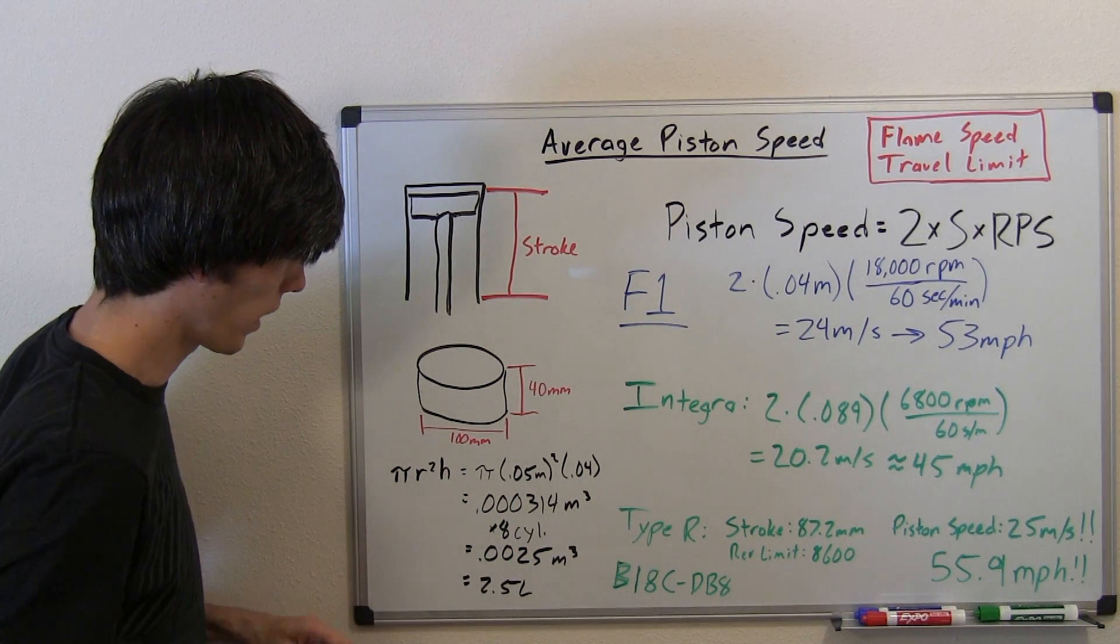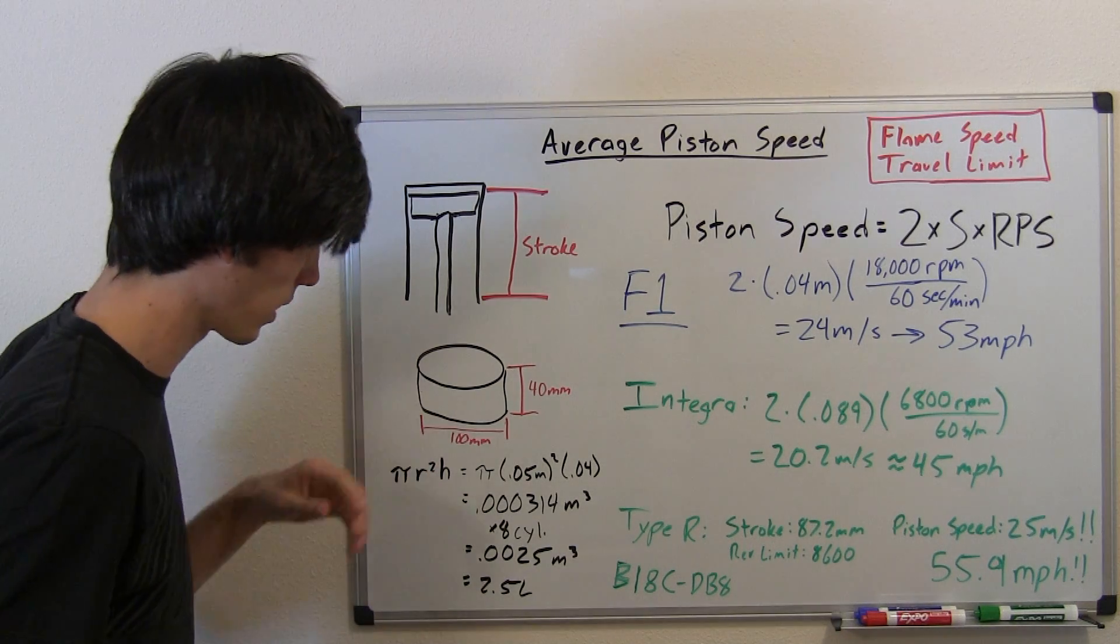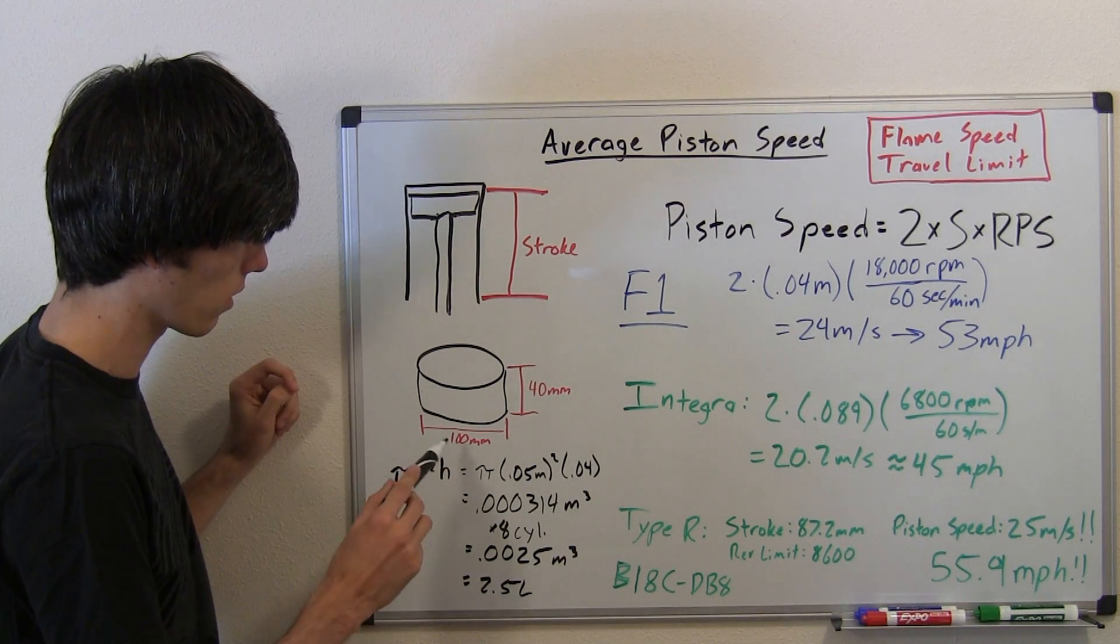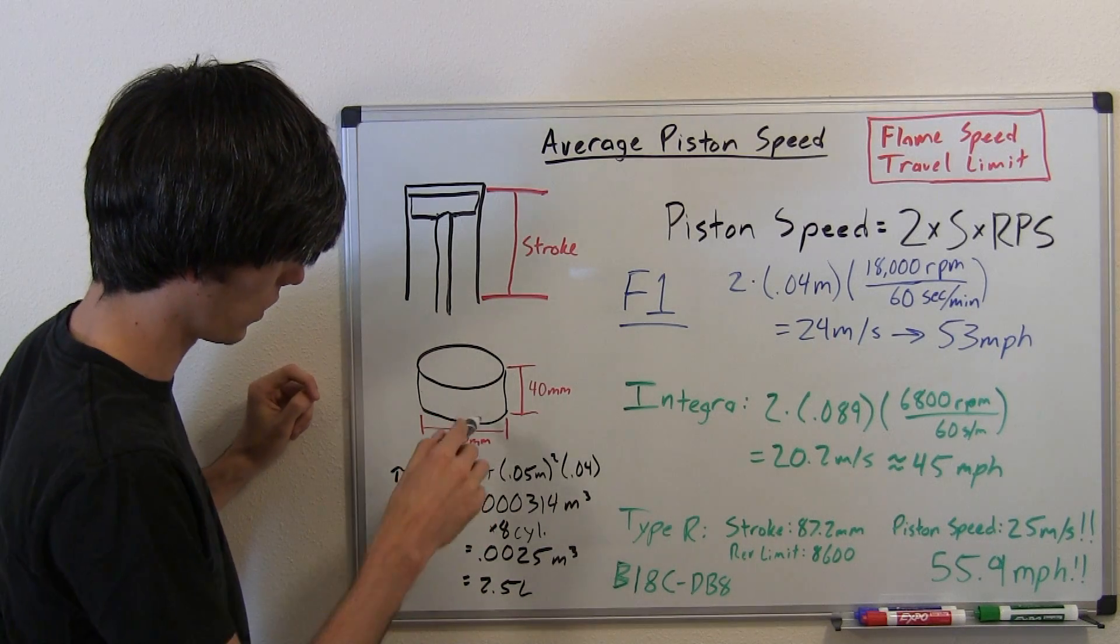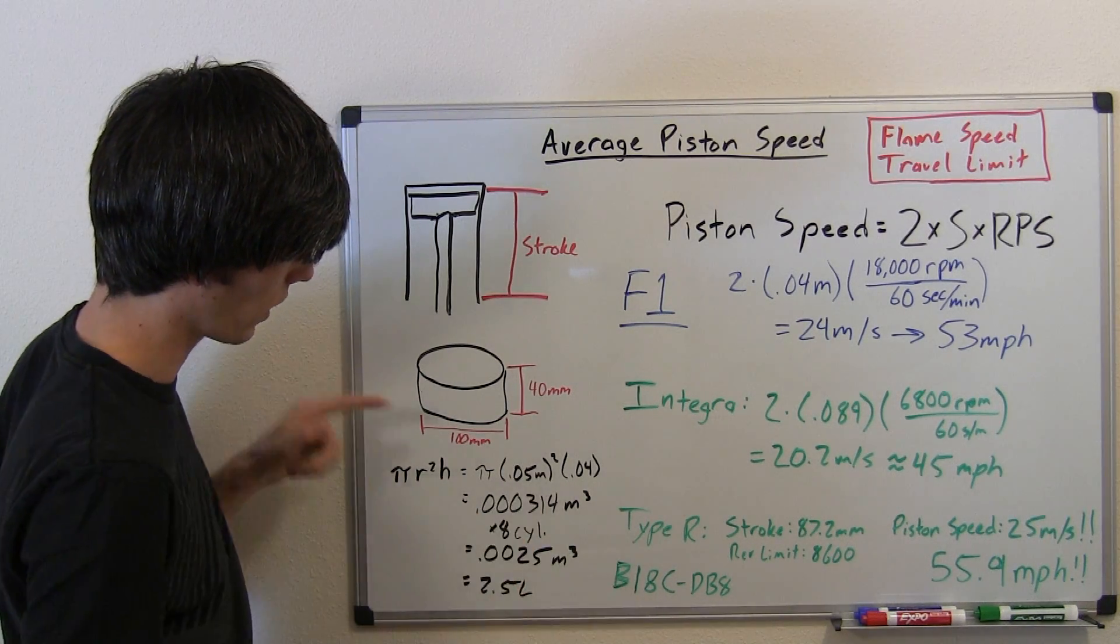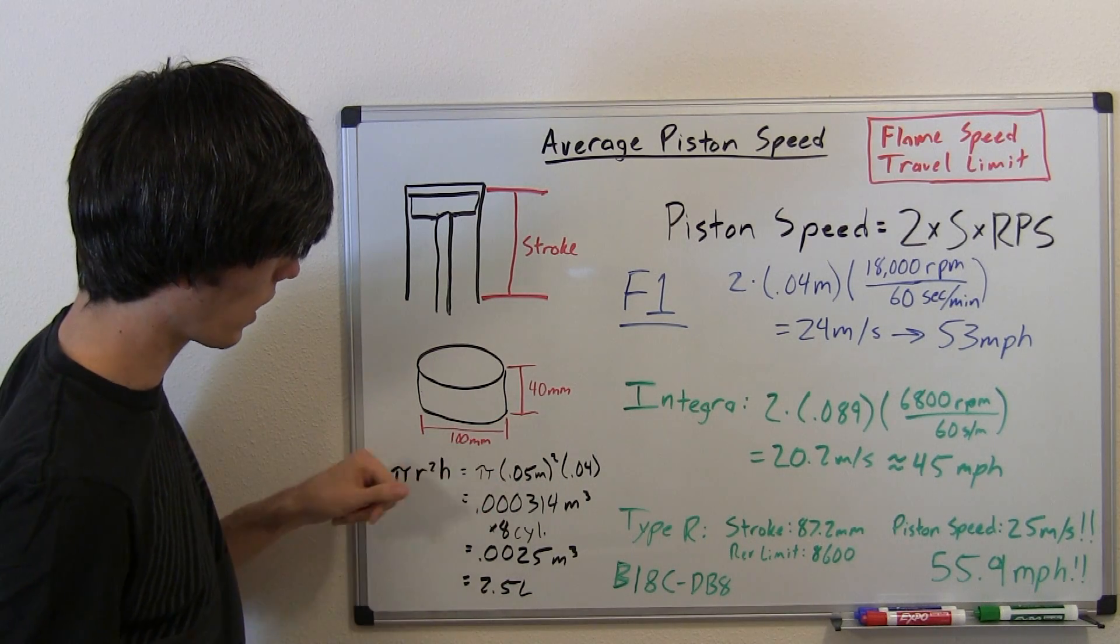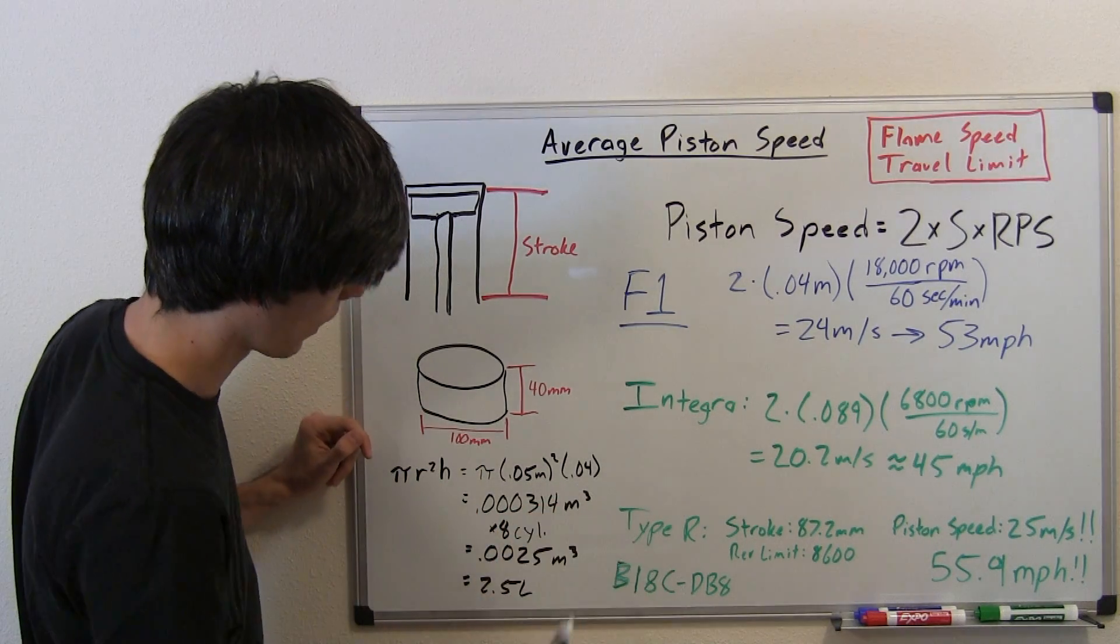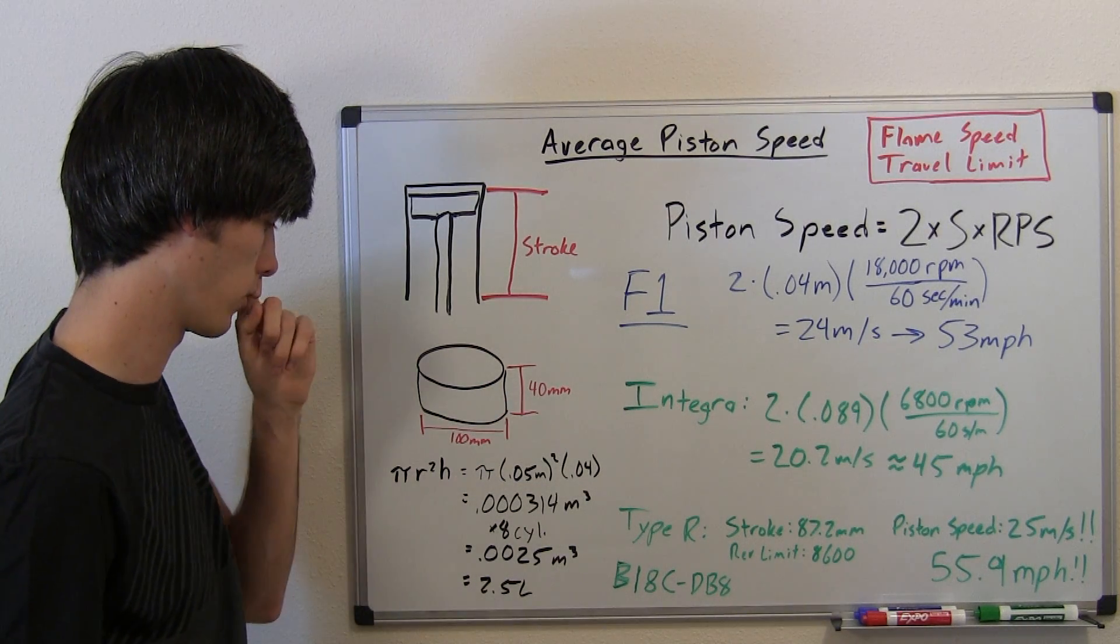Now, these aren't exact. They're actually a little bit larger, but just to prove that it's in the right ballpark, we want to find out the volume of this cylinder. We've got pi r squared times h. Pi r squared, that's your circle, times h, that's the height of the cylinder, so you get the volume of the cylinder. Pi times 0.05 meters squared, so 0.05 is going to be half of the diameter, 50 millimeters. And then 0.04 coming from the 40 millimeters for the stroke.